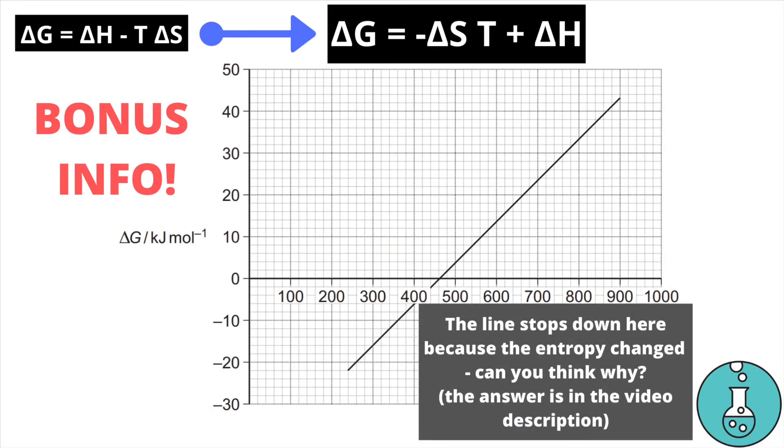Now here I've got a bonus for you. You'll have noticed that this line for our graph does not actually continue past the point shown at the bottom. That's because after this point the entropy changes and the gradient of the line changes. Can you think why this might be? The answer can be found in the video description.